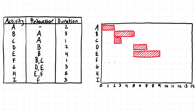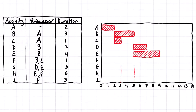Now taking a look at activity F, it can't start until B and C are both finished, and it's one day long. So we find out where B finishes — it's going to finish here at the end of the fifth day — and it also depends on activity C, which finishes here at the end of the third day. Activity F can't start until both of them are complete, so it has to start after this point, and it is just one day long.